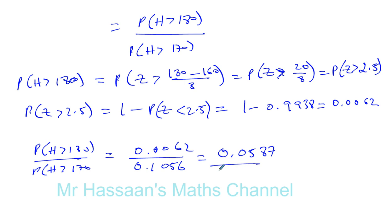So there's the answer for part B. There's a probability that a woman's height will be greater than 180, given that she is tall — i.e. given that her height is bigger than 170. We're only concerned with the heights of people who are greater than 170; we're taking that as the sample space. So that's the answer to that part of the question.